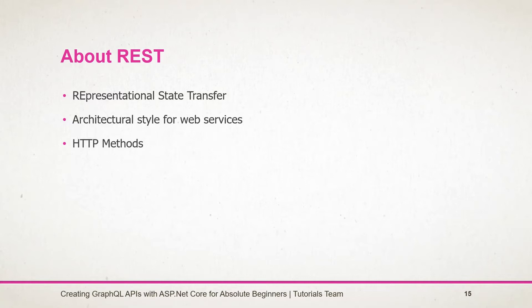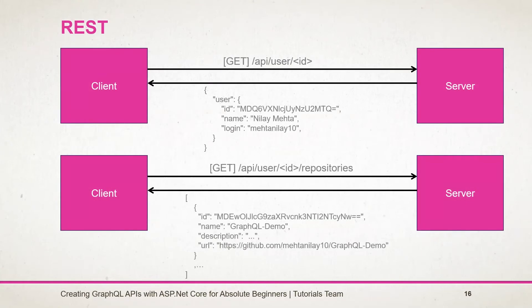Each request has a unique endpoint and returns the data defined in the server. Here is a simple request for a REST service — the client sends an HTTP GET request on this endpoint, passing the user ID to get user details. The server processes it and sends back the data. Again, the client sends a request to get the repository list for that user, and the server returns a JSON array of repository objects which include the ID, name, description, and URL.